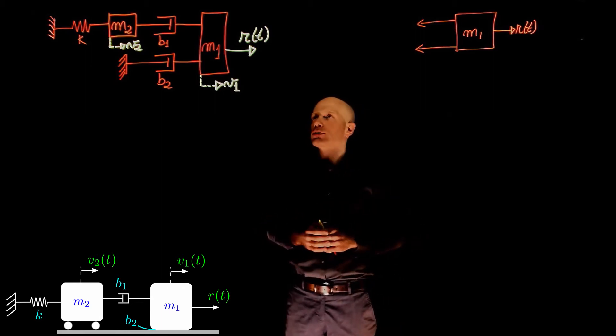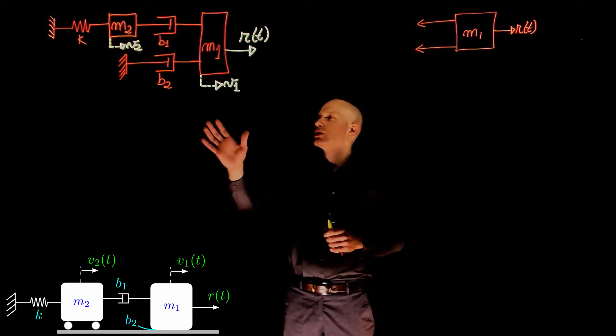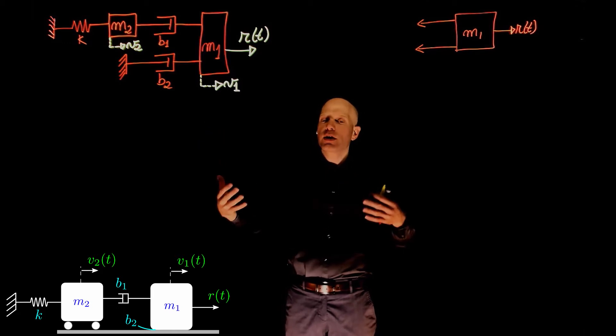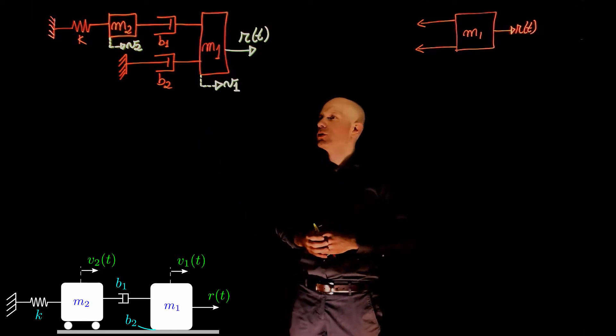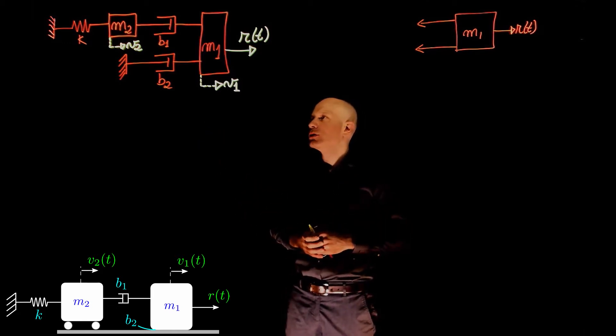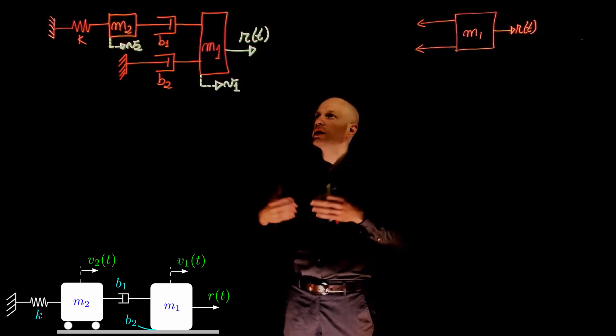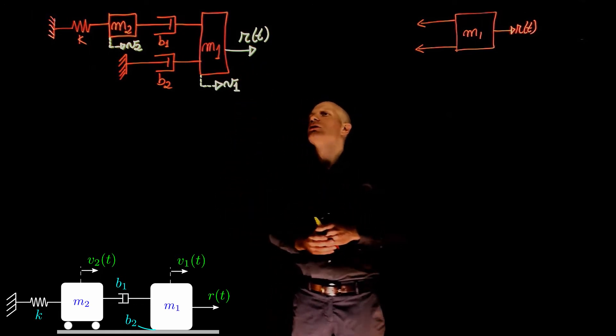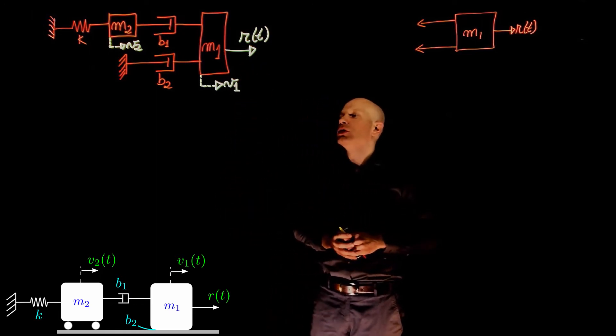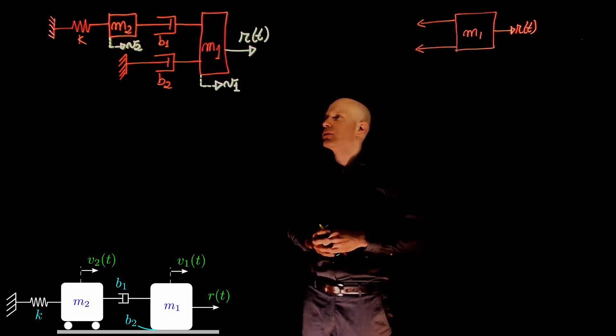In order to find the transfer function, we first need to model the system, find the equations of motion in the frequency domain, and then look for the relation between r and v.